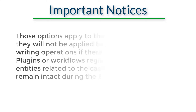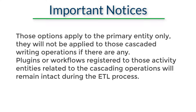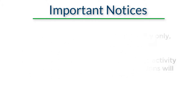Caveat 5: The Process Optimization options apply to the primary entity only. They will not apply to cascaded writing operations if there are any. For instance, if the destination component is updating an account entity, the system will trigger a number of cascading operations, including those activity entities. Plugins or workflows registered to those activity entities related to the cascading operations will remain intact during the ETL process.